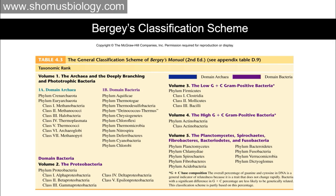The Bergey's classification scheme lists domain Archaea and domain Bacteria. Domain Archaea is covered through class 7, and domain Bacteria covers even more classes. Volume 1 covers both domain Archaea and deeply branching phototrophic bacteria — listed as volumes 1a and 1b.